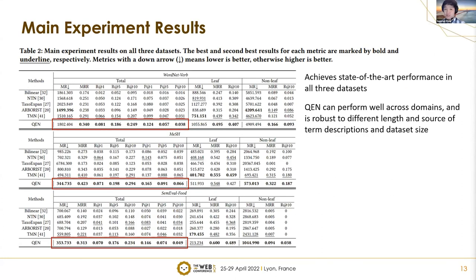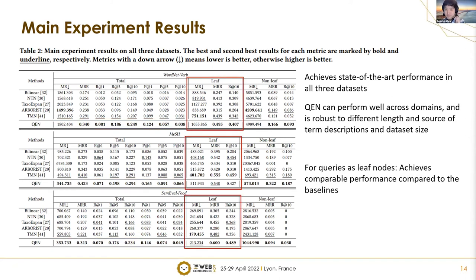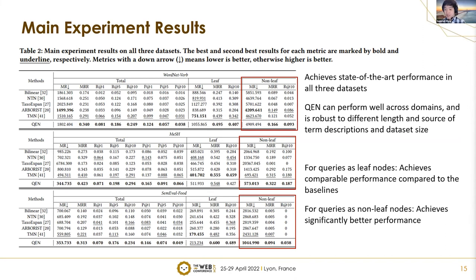From our main experiment results, our model QEN achieved state-of-the-art performance on all three datasets, showing that QEN performs well across domains and is robust to different lengths and sources of term descriptions and dataset sizes. We also separately evaluate leaf queries and non-leaf queries. For leaf queries, our model achieves comparable performance to baselines. But for non-leaf queries, our model achieves significantly better performance, especially on the smaller dataset SemEval Food.